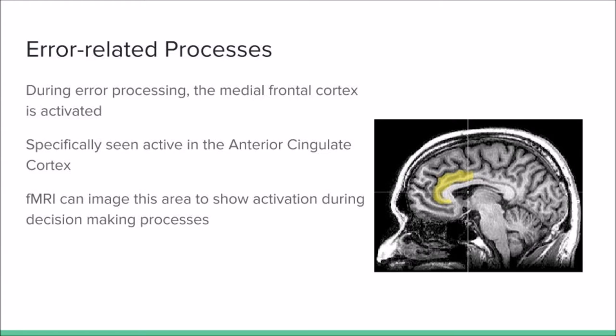This study is about how error-related processes in the brain impact decision-making processes. These occur in the medial frontal cortex, specifically in the most anterior region of the cingulate cortex.